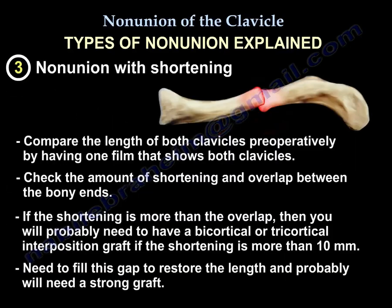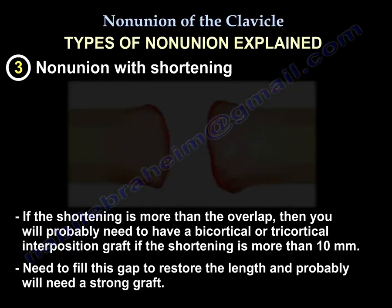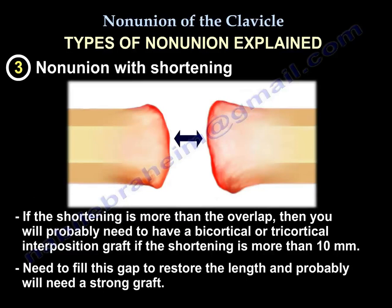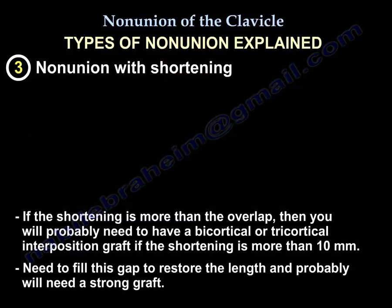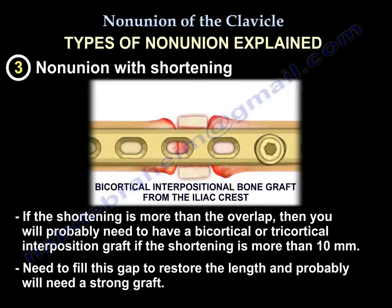Nonunion with shortening: compare the length of both clavicles preoperatively using a single film showing both clavicles, and check how much shortening there is and the overlap between bone ends. If the shortening is more than the overlap, you will likely need a bicortical or tricortical interposition graft. If the shortening is more than 10 millimeters, you need to fill this gap to restore length with a strong graft.